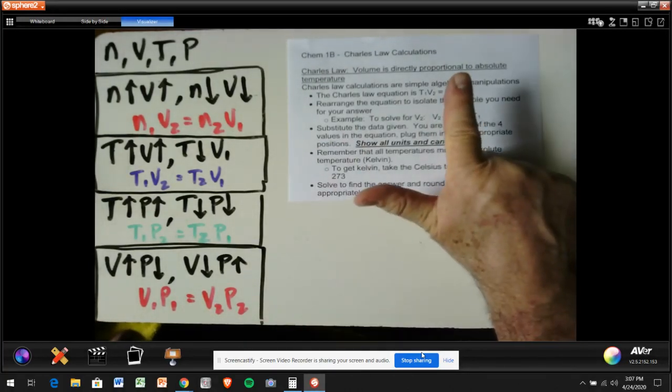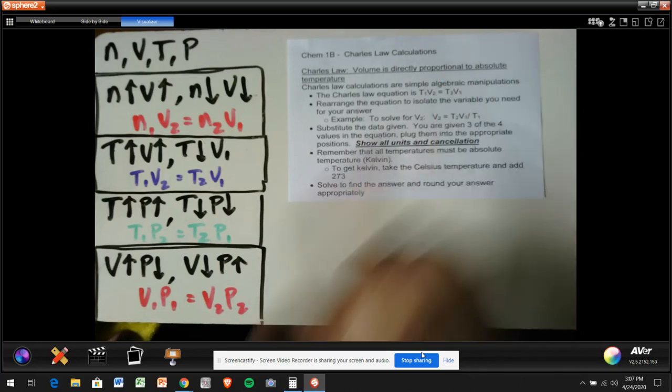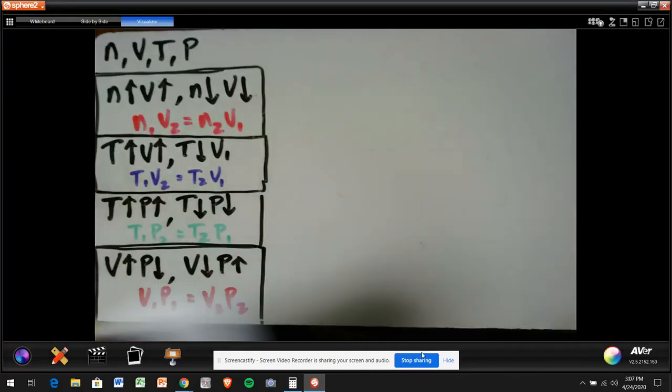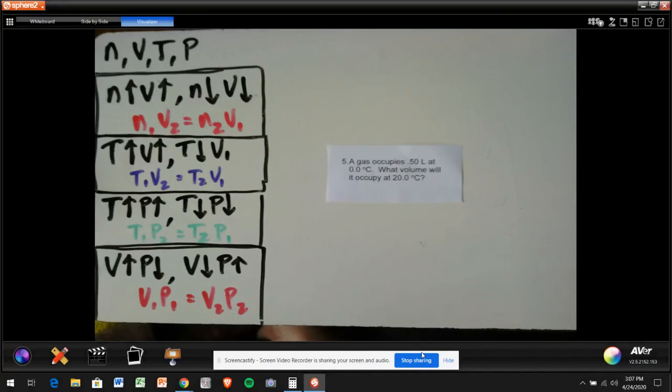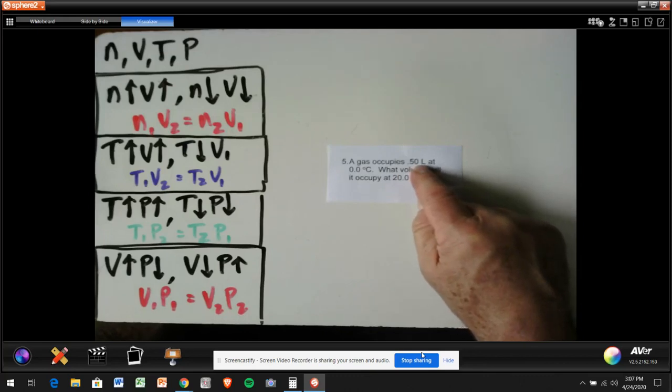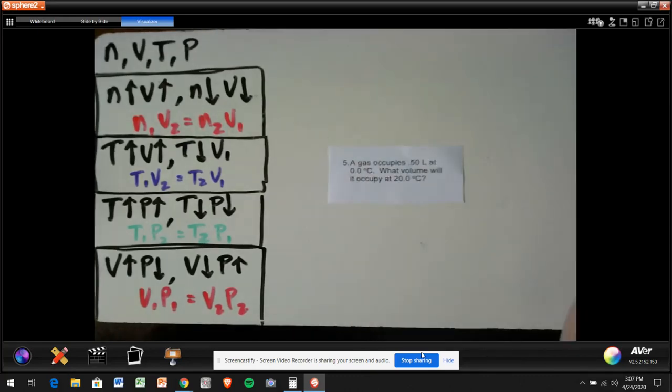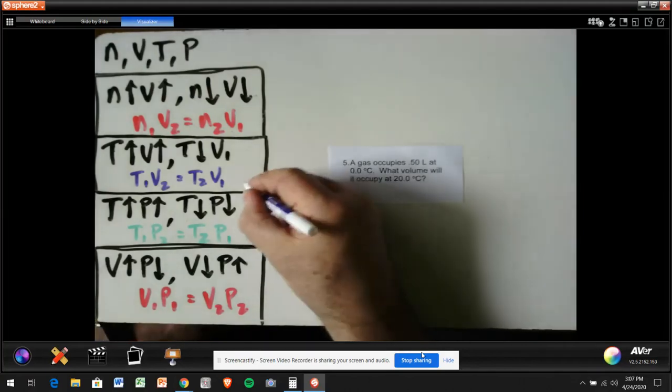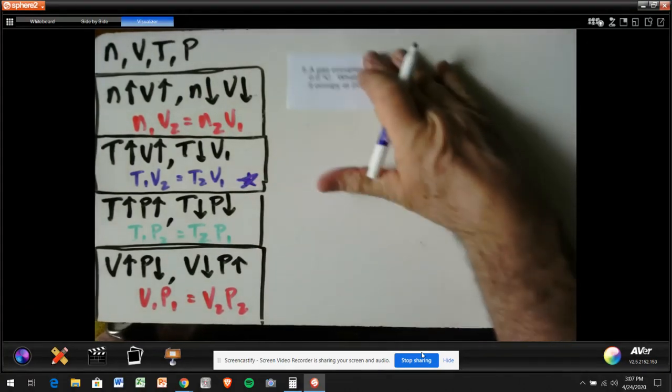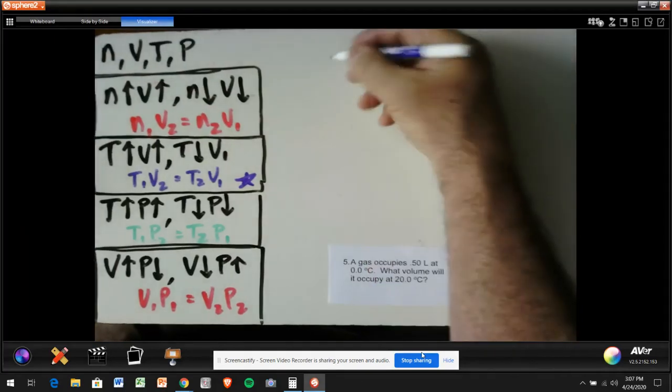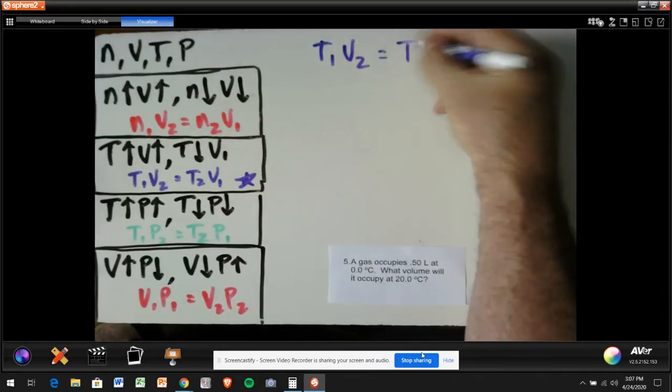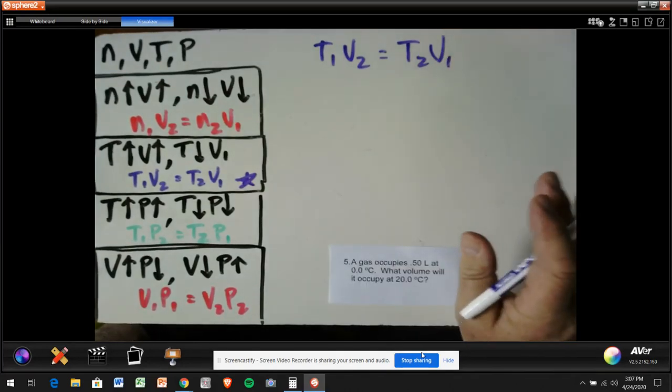List your given. Isolate your variable. Substitute your data. Solve your problem. Now, here's an example. I've got here a gas occupies a half a liter, 0.50 liters, at zero Celsius. What volume will it occupy at 20 degrees Celsius? Well, this liters is volume, and Celsius is temperature. So I'm looking for volume and temperature here. And it doesn't matter whose law it is, but if I'm doing volume and temperature, I'm doing this. So I'm going to move this down, and I'm going to write up at the top here, I got T1V2 equals T2V1. That's got to be given to you. I write the equation down.